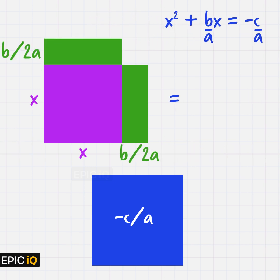We now have almost a square, but it's not complete. We need to add that little piece on the top right to complete the square. Now, you would notice that this missing square has sides equal to b/2a.